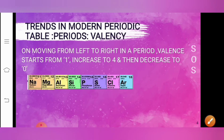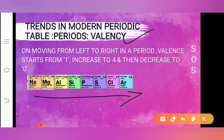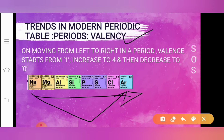The next trend is valency. On moving from left to right in a period, valency starts from one, increases to four, then decreases to zero. You should know that valence electrons and valency are different. Valency means the extra electron which an element has on its shell, or the electrons needed by the shell to achieve the octet configuration.